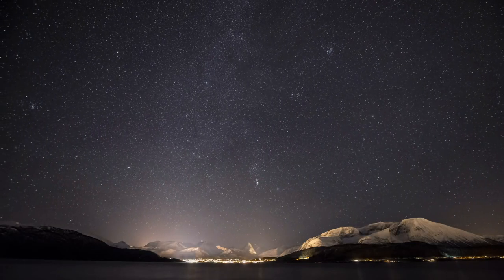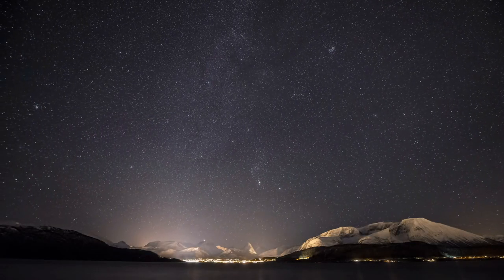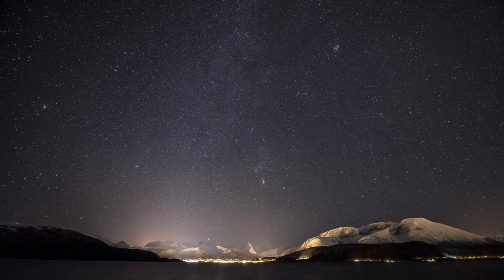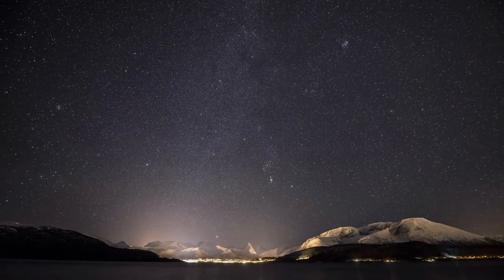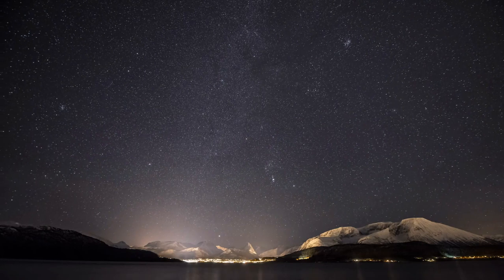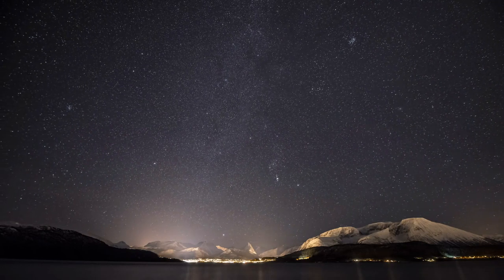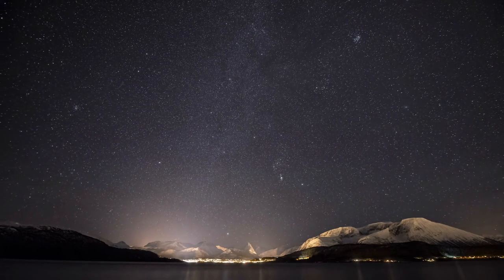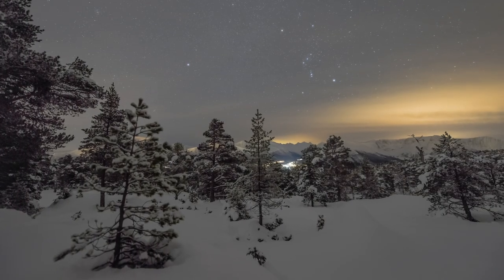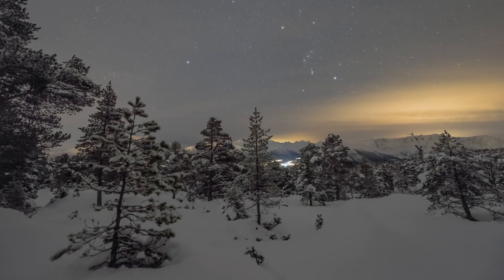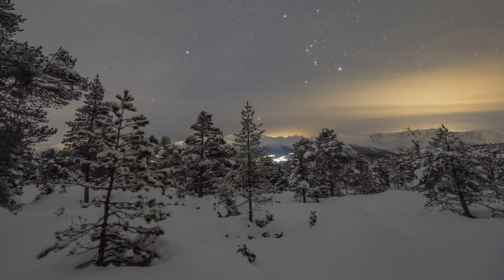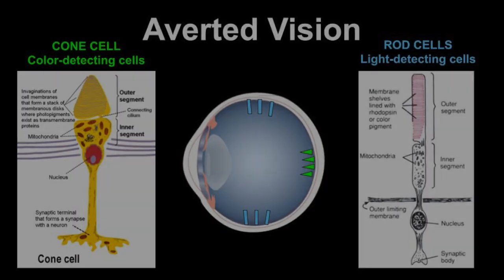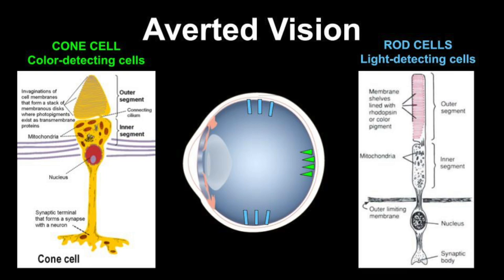Have you ever gone outside, looked at the night sky and seen a little cloudy spot that looks hazy, but sometimes when you look at it, it comes into sharper view? I've had this experience many times, especially with looking at the Pleiades. I learned about a technique that stargazers can use to better see these types of celestial objects, and it's called averted vision.